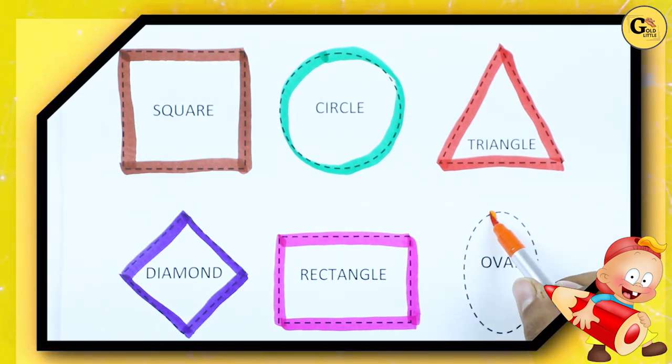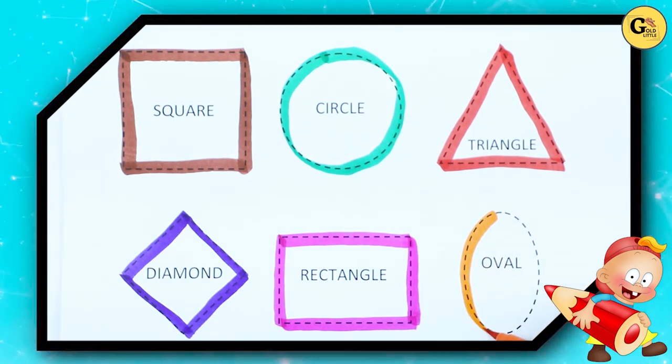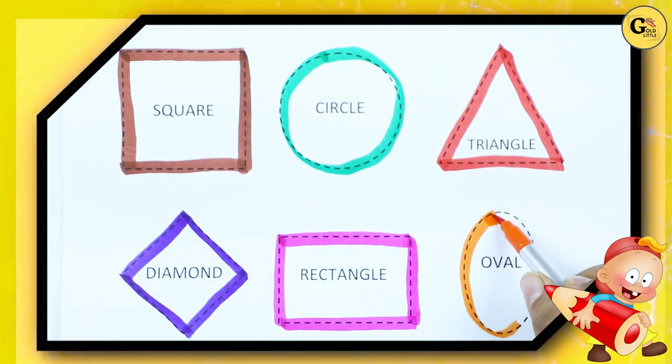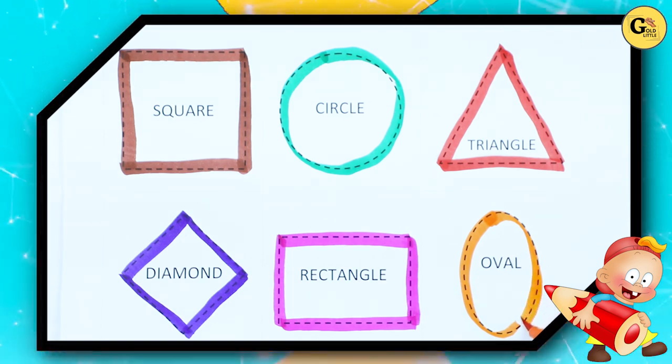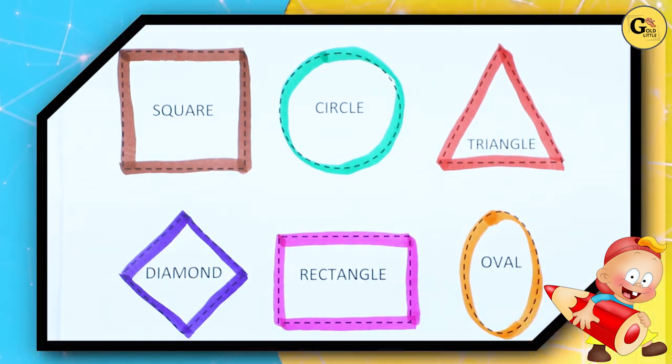Oval. We make oval with orange color. It's an oval with orange color.